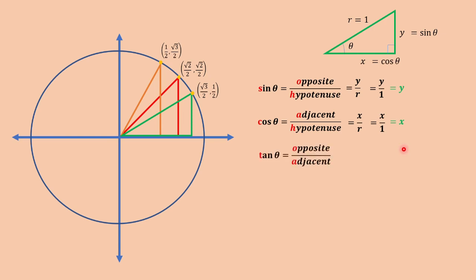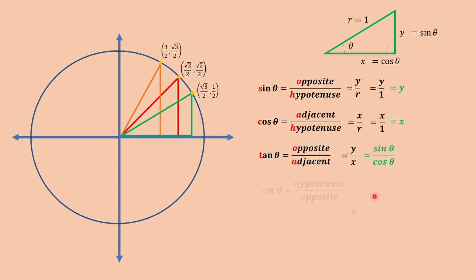For tangent theta, we have opposite over the adjacent. Opposite is y, adjacent is x. Therefore, in terms of sine and cosine, tangent theta is equal to sine theta over cosine theta.